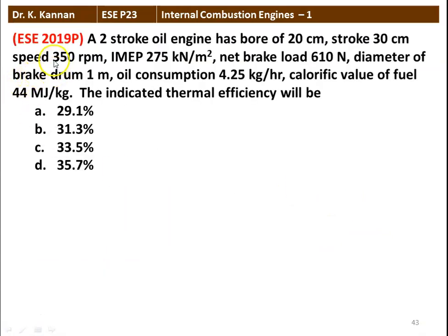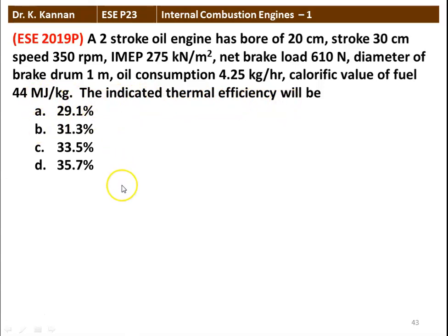The next question from the 2019 question paper: a 2-stroke oil engine has a bore of 20 centimeter, stroke 30 centimeter, speed 3350 rpm, IMEP indicated mean effective pressure 275 kilonewtons per meter square, net brake load 610 Newton, diameter of the brake drum 1 meter, oil consumption 4.25 kilograms per hour, calorific value of the fuel 44 megajoules per kilogram. The indicated thermal efficiency will be 29.1%, 31.3%, 33.5%, or 35.7%. The correct answer is 29.1%.